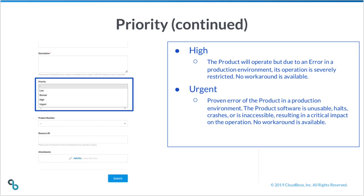High priority: the product will operate, but due to an error in a production environment, its operation is severely restricted and no workaround is available. Urgent priority: a proven error of the product in a production environment where the product software is unusable, halts, crashes, or is inaccessible, resulting in a critical impact on operations and no workaround is available.